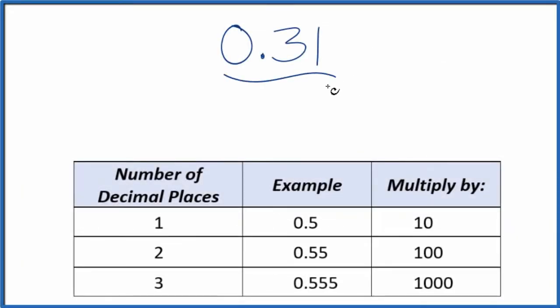Let's convert the decimal 0.31 to a fraction. So to start off, let's just call it 0.31 over 1. Since we're only dividing by 1, we haven't changed the value. It's still 0.31, but now we have the start of a fraction.